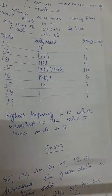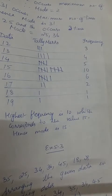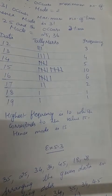Next one, sixth one — find the mode of the data 3, 6, 9, 12, 15. When you see these numbers, none of the numbers is repeating. So we say no mode.